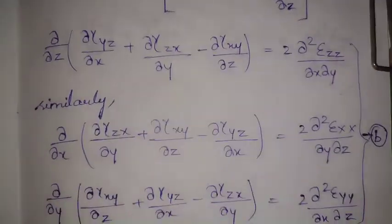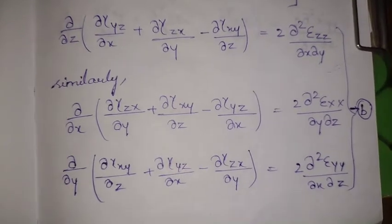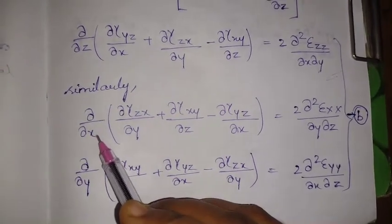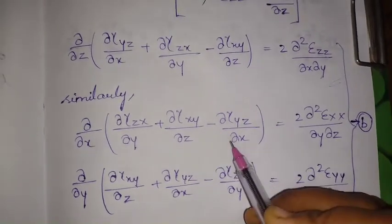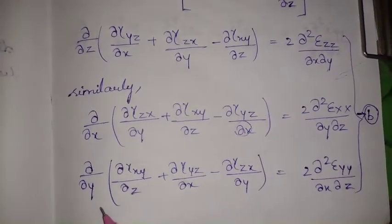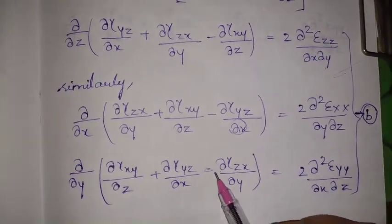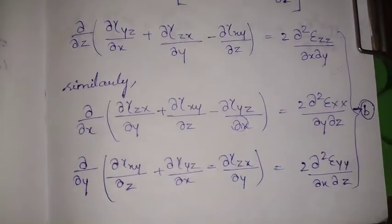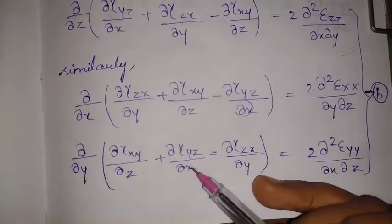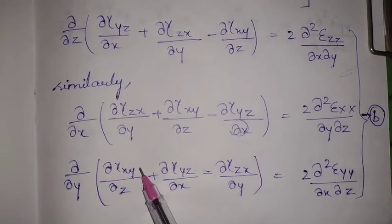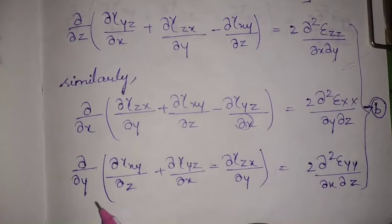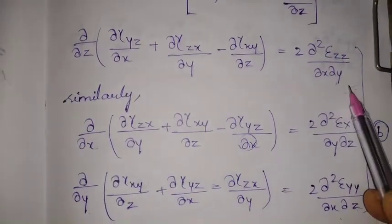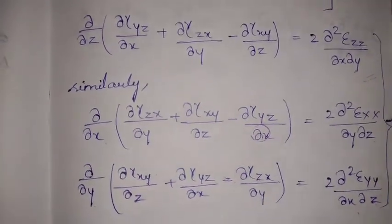Similarly, we get the remaining two compatibility conditions in the second group. To remember them: whichever variable appears as the common differentiator corresponds to the epsilon term on the right-hand side with the other two variables. If we subtract the equation containing z, we differentiate with respect to z; for x, with respect to x; for y, with respect to y. The pattern holds cyclically through x, y, z.